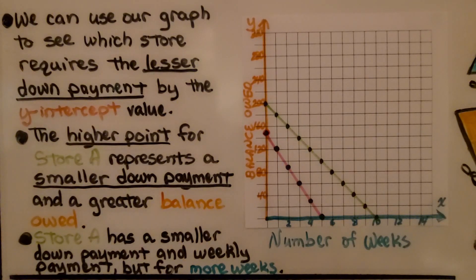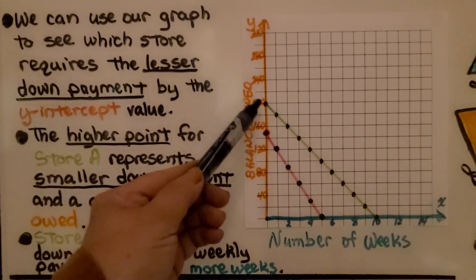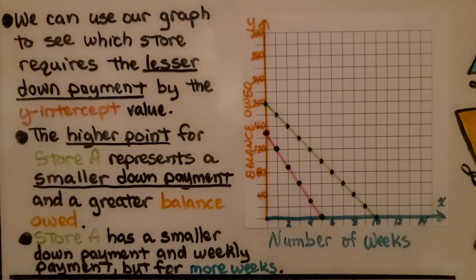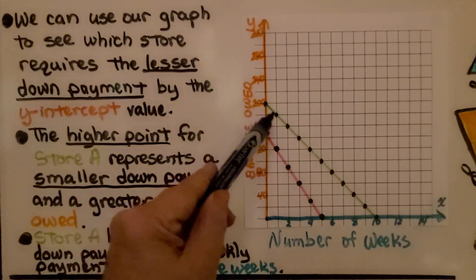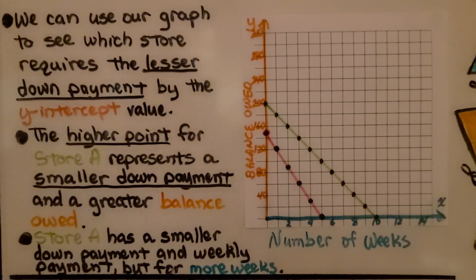We can use our graph to see which store requires the lesser down payment by the y-intercept value. The higher point for store A represents a smaller down payment and a greater balance owed. Store A has a smaller down payment and weekly payment. Our points are closer together, so it's a smaller weekly payment, but we have to pay for more weeks.